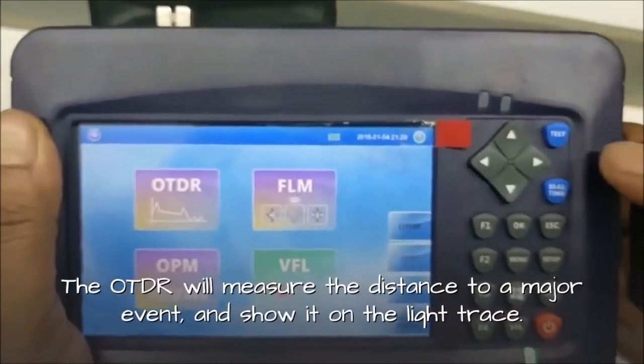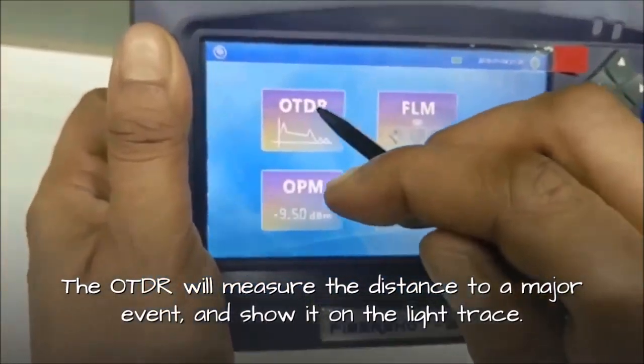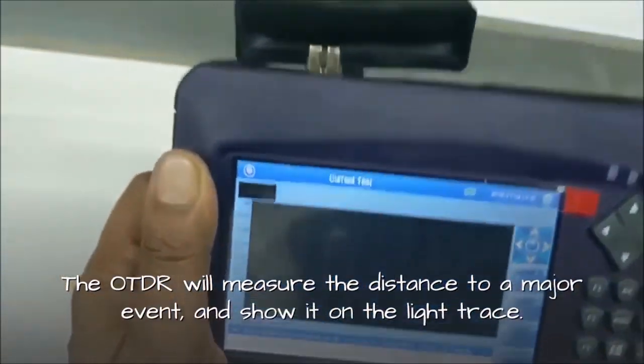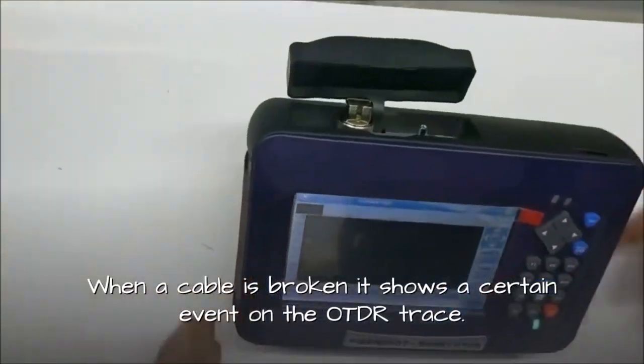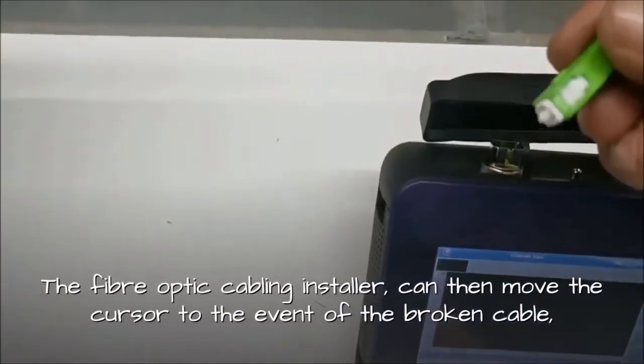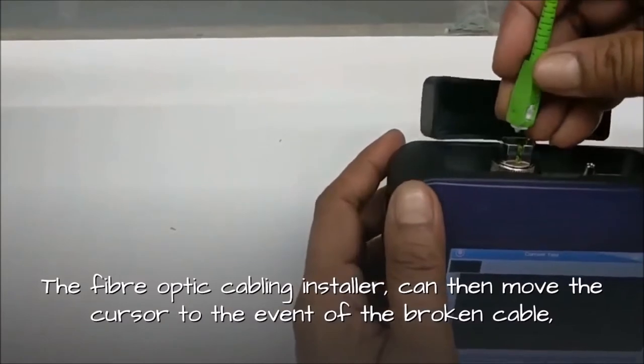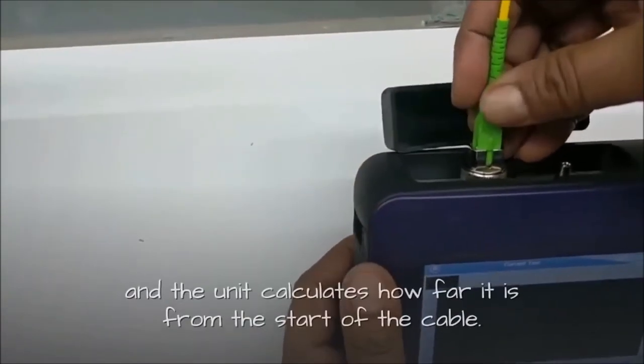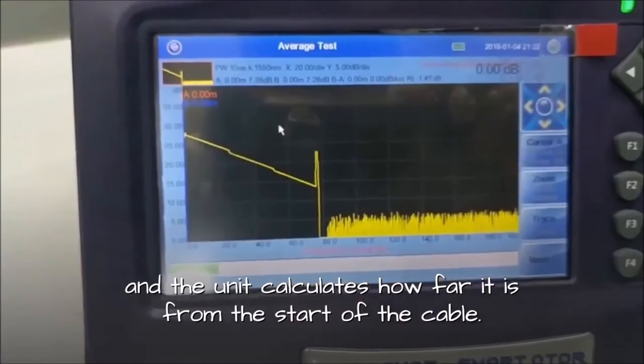The OTDR will measure the distance to a major event and show it on the light trace. When a cable is broken, it shows a certain event on the OTDR trace. The fiber optic cabling installer can then move the cursor to the event of the broken cable, and the unit calculates how far it is from the start of the cable.